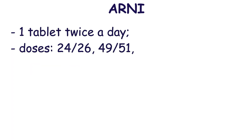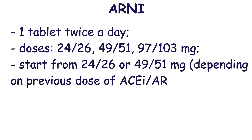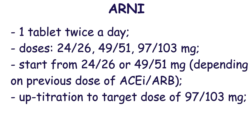There are two brand names of the sacubitril-valsartan combination: Entresto and Vymada. These drugs are taken twice a day. The available doses are 24/26 mg, 49/51 mg, and 97/103 mg. The dose should be uptitrated to 97/103 mg twice a day if the patient tolerates. If the patient previously has taken a low dose of ACE inhibitors or angiotensin receptor blockers, or hasn't taken them at all, the initial dose is 24/26 mg. If the patient has taken a moderate or high dose, the initial dose is 49/51 mg twice a day. For patients with reduced glomerular filtration rate or hepatic impairment, the drug should be prescribed carefully and the dose should not be high.